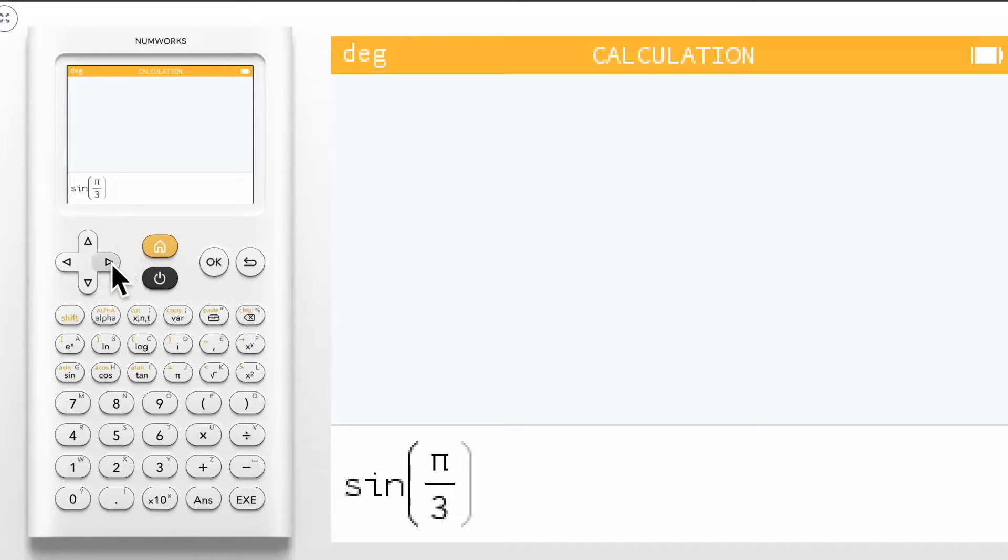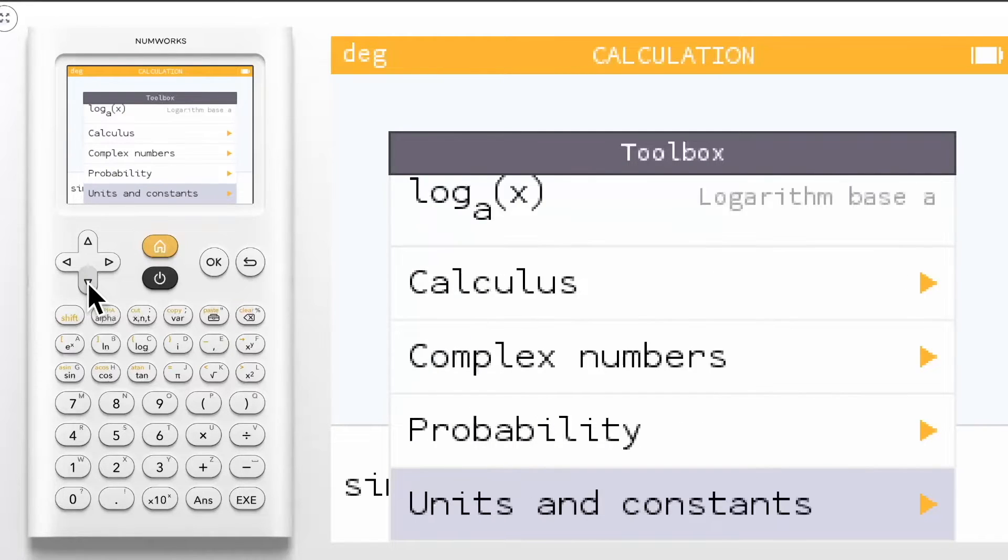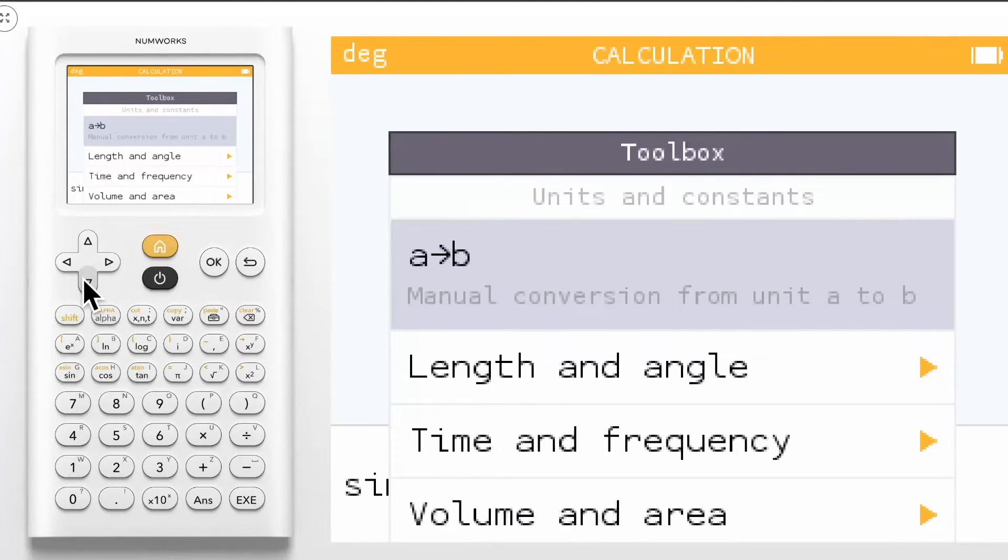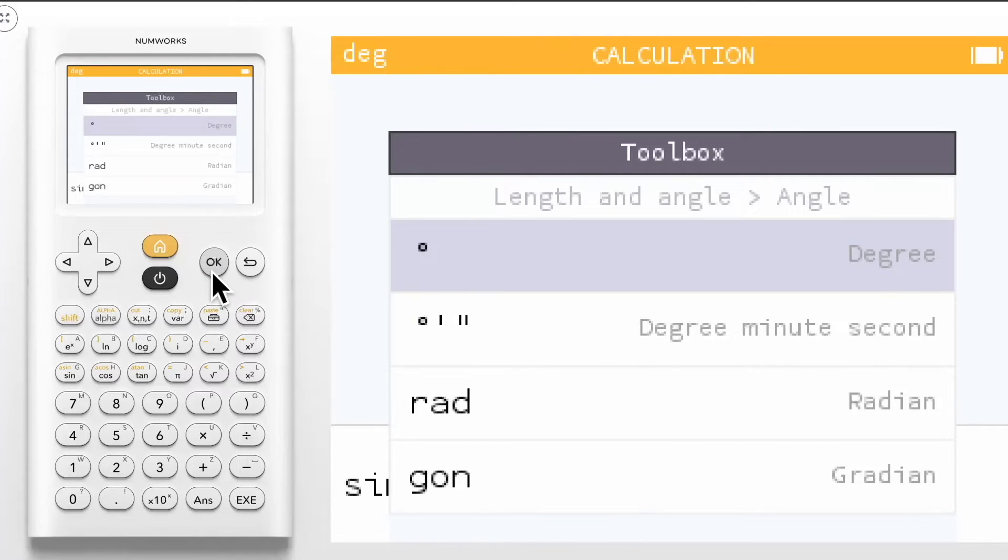For example, while our calculator is now in degree mode, we can evaluate a trig expression using radians. Within the toolbox, navigate down to units and constants. Enter length and angle, and select angle. Now select radian.